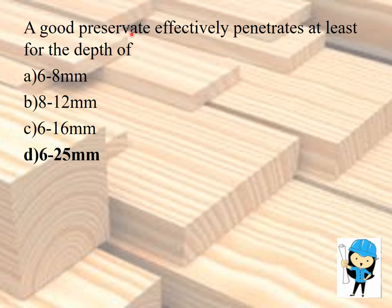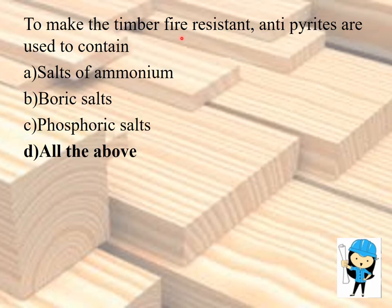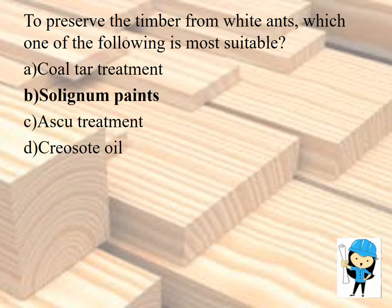A good preservative effectively penetrates to a depth of at least 6 to 25 mm. To make timber fire resistant, antipyrides are used, which contain salts of ammonium, boric salts, and phosphoric salts. These three salts are used as fire-resistant antipyrides. To preserve timber from white ants, solignum paints are most suitable.